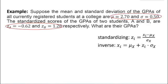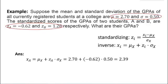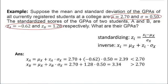Then, the actual scores of the two students are respectively 2.39 and 3.34. And we notice that when the standardized value is positive, the actual value will be greater than the mean, and vice versa. In fact, this is a universal conclusion which can be easily seen from the formula.